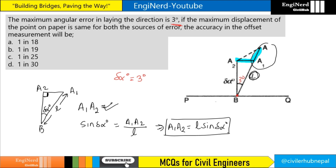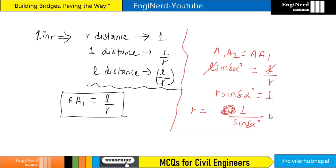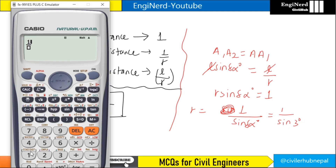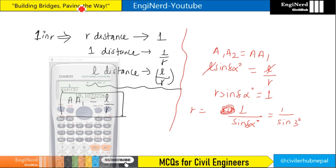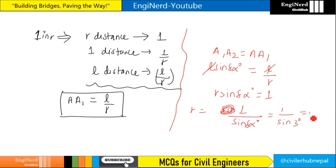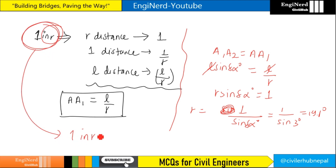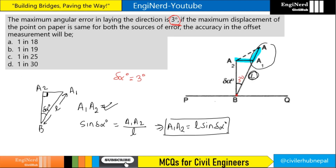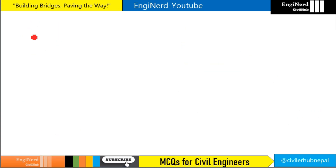The error is given as 3 degrees. So we put del_alpha = 3 degrees: R = 1 / sin(3°) = 19.1. So the accuracy is 1 in R, which is 1 in 19.1. The correct option is 1 in 19.